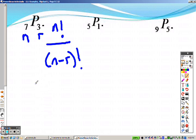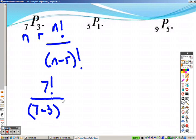So when you fill it into that formula, it's 7 factorial over 7 minus 3 factorial. So it's really like saying 7 factorial over 4 factorial. And when you write that out,